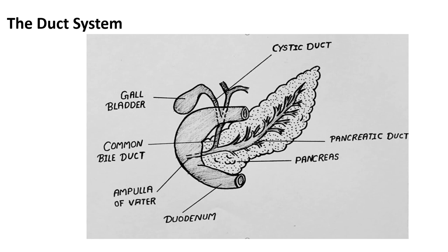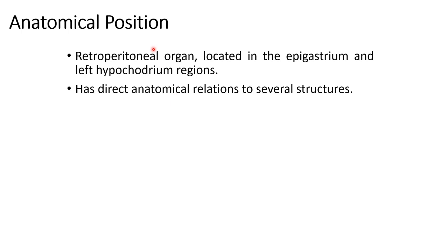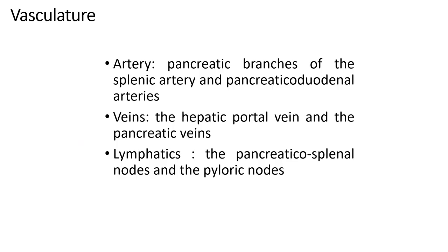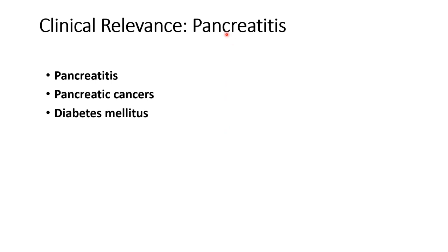Draw and describe this structure. Regarding the anatomical position, pancreas is a retroperitoneal organ located in the epigastrium and left hypochondriac region, with direct anatomical relations to several structures. Mention the pancreas relations: structures anteriorly, superiorly, laterally on right, laterally on left, and posteriorly. For the vasculature, arteries are the pancreatic branches of splenic artery and pancreaticoduodenal arteries. Veins are the hepatoportal vein and pancreatic vein. Lymphatics include pancreaticosplenic nodes and pyloric nodes. Clinical conditions affecting the pancreas are pancreatitis, pancreatic cancers, and diabetes mellitus.